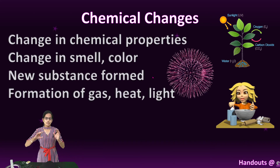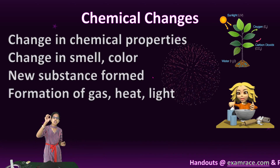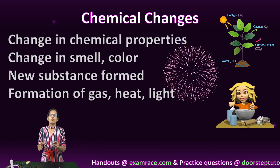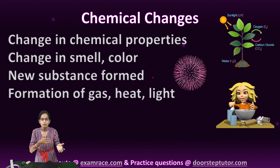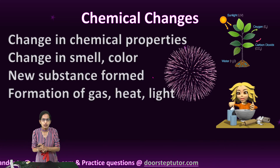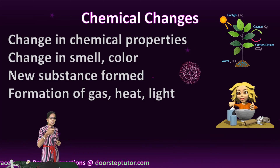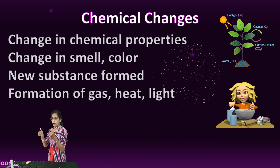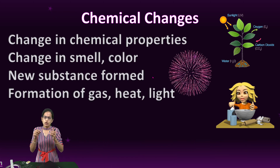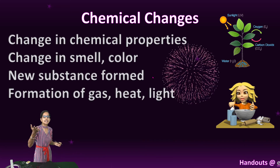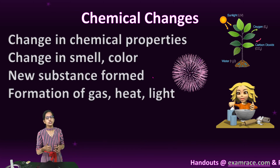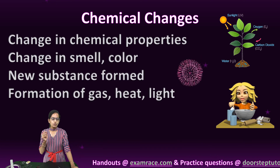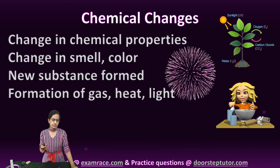Understanding chemical changes: in chemical changes there is a change in the chemical property. Burning of paper, burning of wood, burning of candle — all of those are good examples of changes in the chemical composition. There can be production of heat, production of light or any other radiation such as ultraviolet radiation, or even sound — all of those would be an example of chemical change.